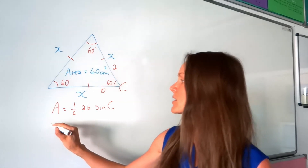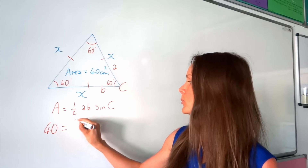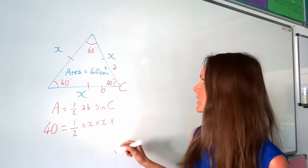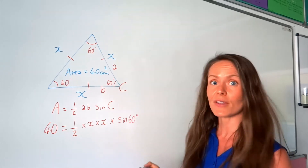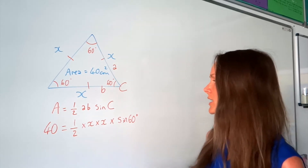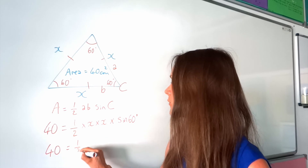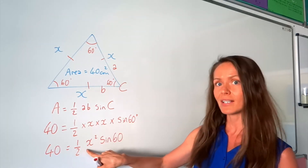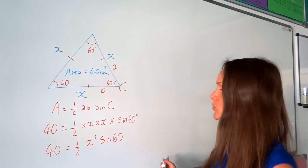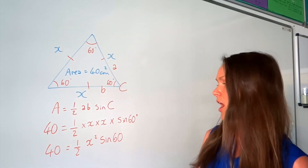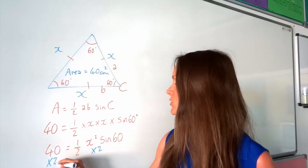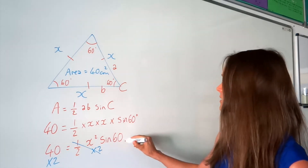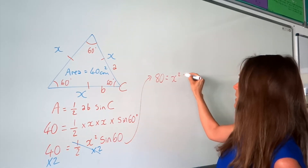This time we know capital A, the area, so I'm going to replace that with 40. Then a and b are both x, so I've got times x times x — that's x squared — and then sine 60. I've filled in everything I know, so now I need to solve this equation. To get rid of the half, I multiply both sides by 2 — 2 halves is 1 — leaving x squared sine 60 on the right. On the left, 2 times 40 gives 80. So 80 equals x squared sine 60.